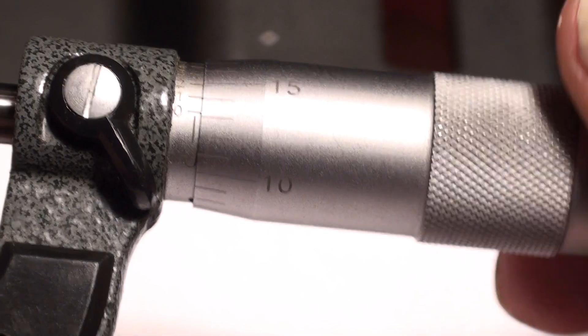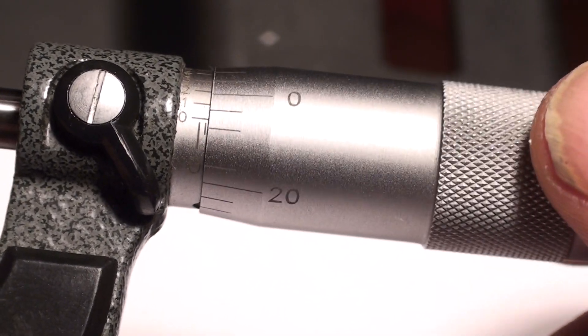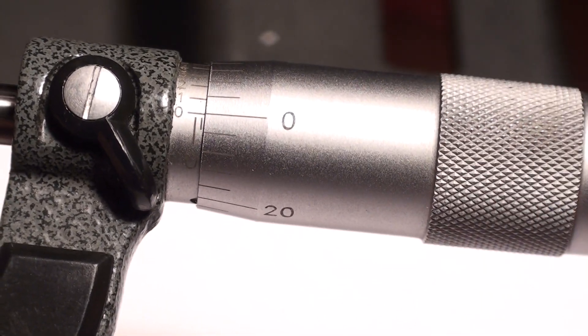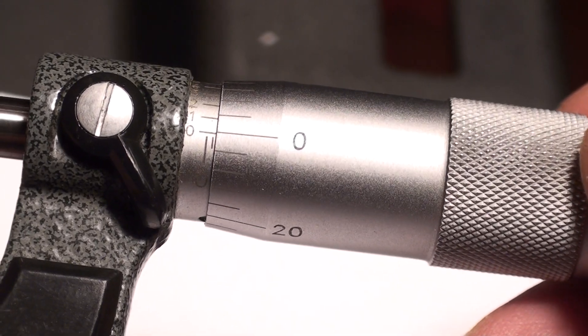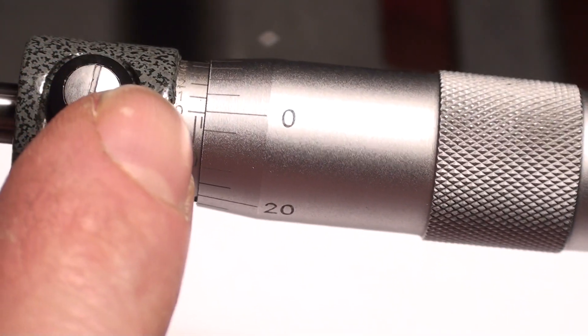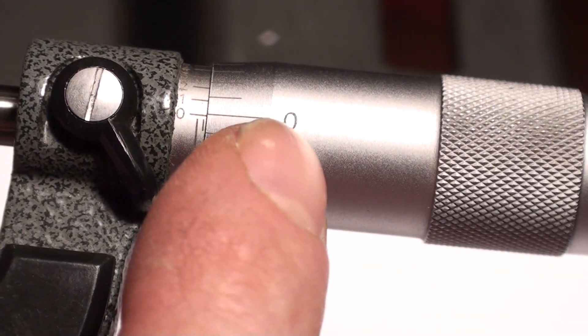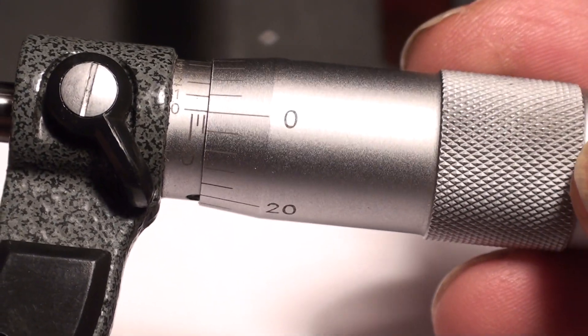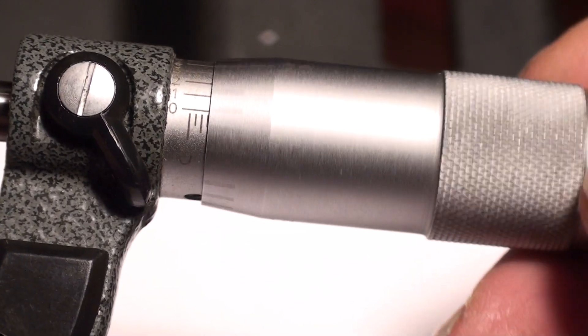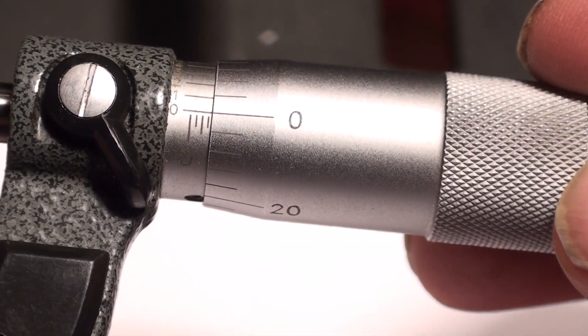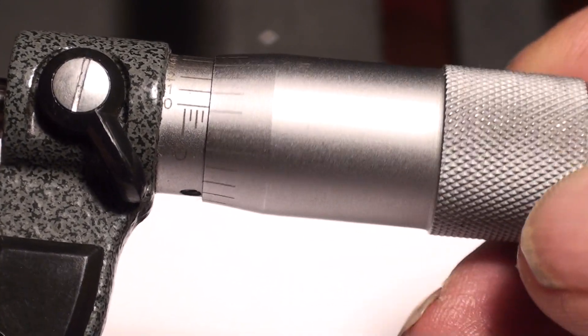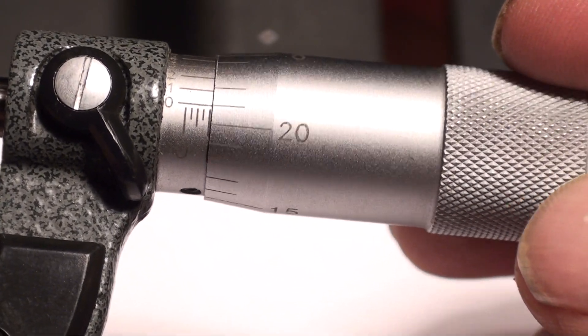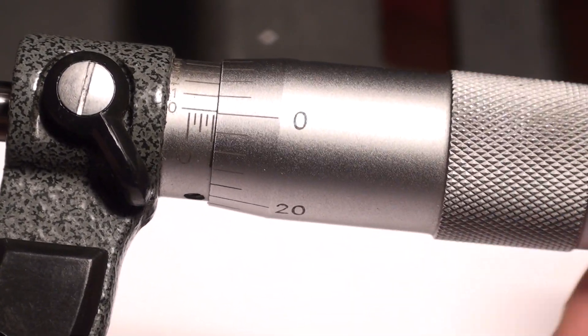five, ten, fifteen, twenty, twenty-five - is one of those lines. So every increment on here is one turn of the thimble. That would be twenty-five thousandths, fifty thousandths, seventy-five thousandths, one hundred thousandths.